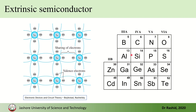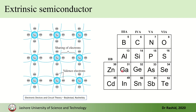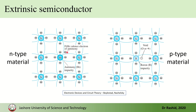Silicon is a group-four element with four valence electrons that are shared with four neighboring atoms. But if we replace one silicon atom with a group-five element — say, antimony — we get an extra electron. This extra electron is not needed for bonding. This is called an n-type material. This is no longer an intrinsic semiconductor; it is an extrinsic semiconductor because of the doping.